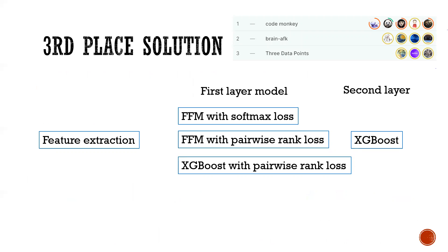For this competition, the third-place solution is highlighted — people called it 'the war of FFM' since top positions all used FFM. Their approach has two layers: the first layer trains FFM with two different losses — softmax loss for click probability and pairwise rank loss for ranking — plus XGBoost trained with pairwise rank loss. The second layer uses XGBoost to combine these three models together.